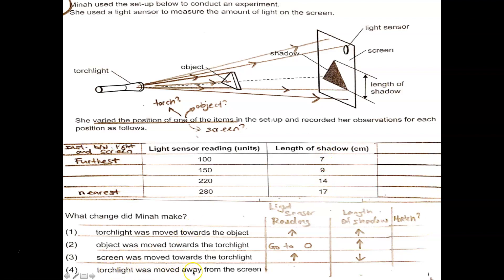What if the torchlight was moved away from the screen? Away means it's further away from the light sensor. Then the light intensity should be decreasing. But here it shows increasing. So therefore, four must be wrong. Even the length of the shadow is wrong. If you move further, the length of the shadow will decrease but here shows increasing. So the answer for this is clearly one.